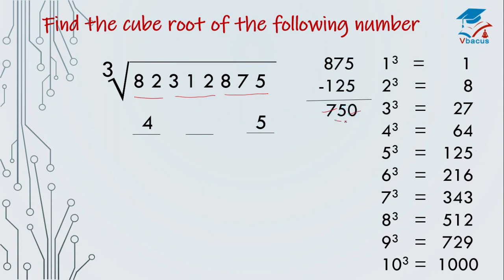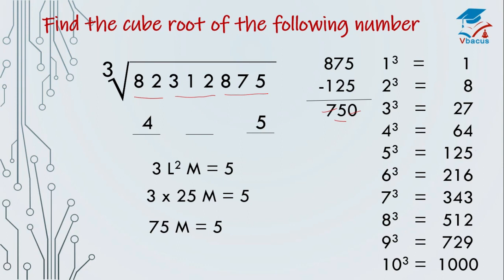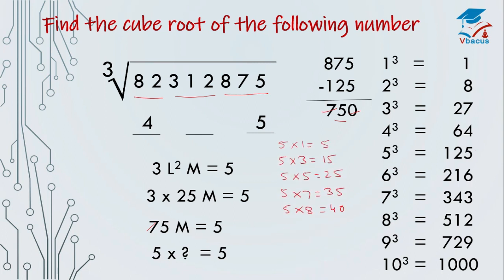Forget 7 and 0 and consider 5. Apply it in the formula: 3 × L² × M = 5. Last digit is 5, so 3 times 25 — square of 5 is 25 — 3 times 25 times M equals 5. This 5 is from here. So 3 times 25 is 75; 75 × M = 5. Consider 5, forget 7. By which number do we multiply 5 to get the digit at unit place 5? There are 5 options: 5×1=5, 5×3=15, 5×5=25, 5×7=35, 5×9=45 — this last one we don't have to consider, so there are 5 options.